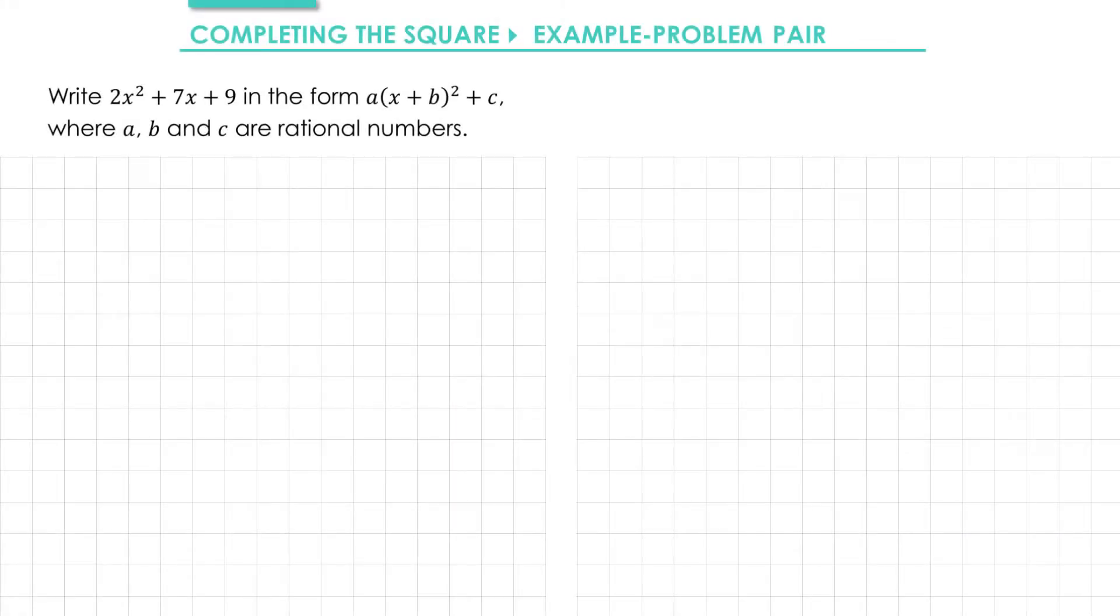In this example we're going to continue looking at completing the square. This time we're looking at a quadratic where the x squared term is not 1. So there's an extra step with these kind of questions.